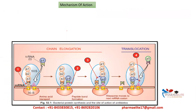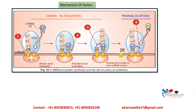Now we'll see the mechanism of action of chloramphenicol. This is a diagram of bacterial protein synthesis. This is the 50S ribosome, this is the 30S ribosome, and this is the mRNA. This is the A site or acceptor site, and this is the P site. This is the nascent peptide chain which has formed. In the first step, the aminoacyl-tRNA will attach to the A site. Then there is a transfer of the nascent peptide chain from the P site to the A site, followed by translocation.